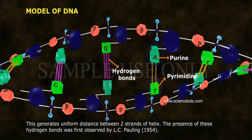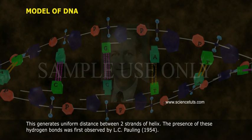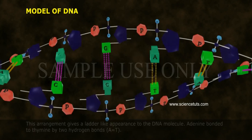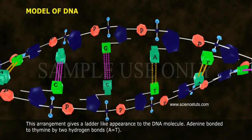The base molecules of the two chains are linked through weak hydrogen bonds between one purine in one strand and a pyrimidine on the opposite strand. This generates a uniform distance between the two strands of the helix. The presence of these hydrogen bonds was first observed by L.C. Pauling in 1954. This arrangement gives a ladder-like appearance to the DNA molecule.